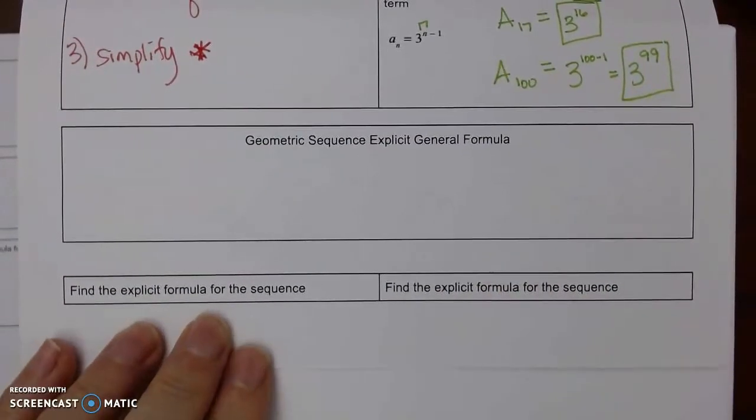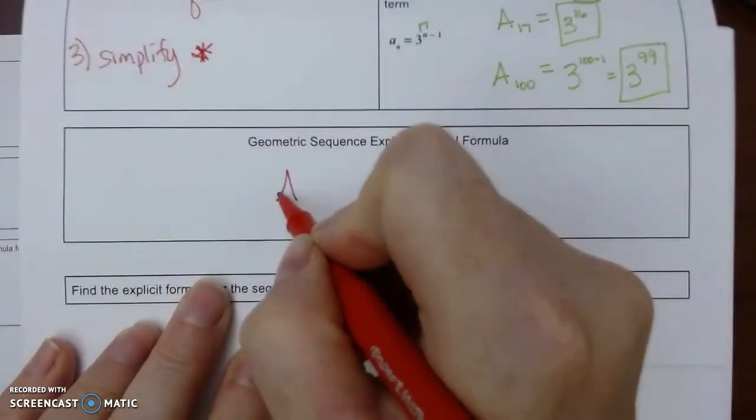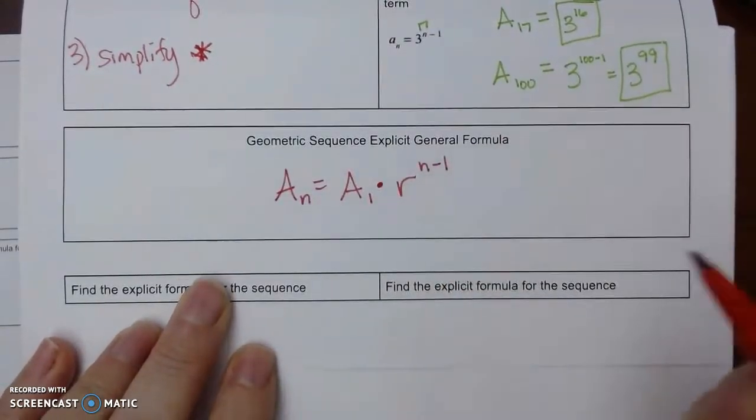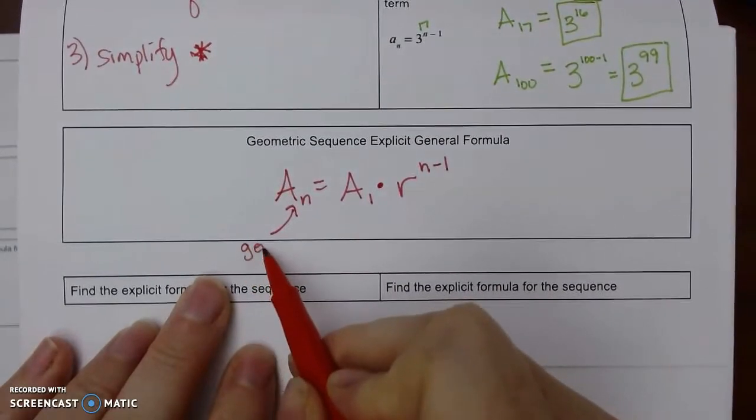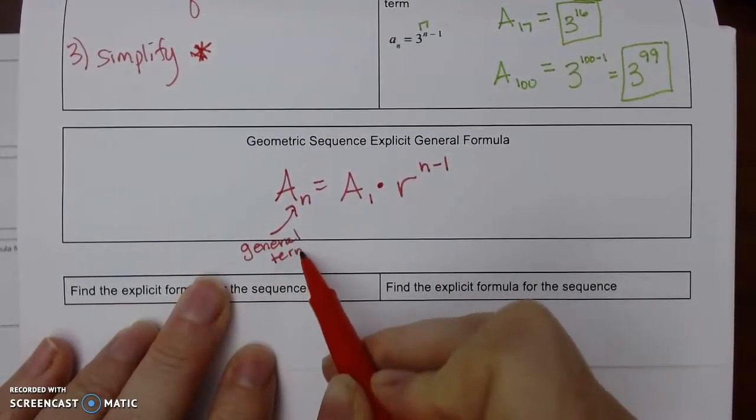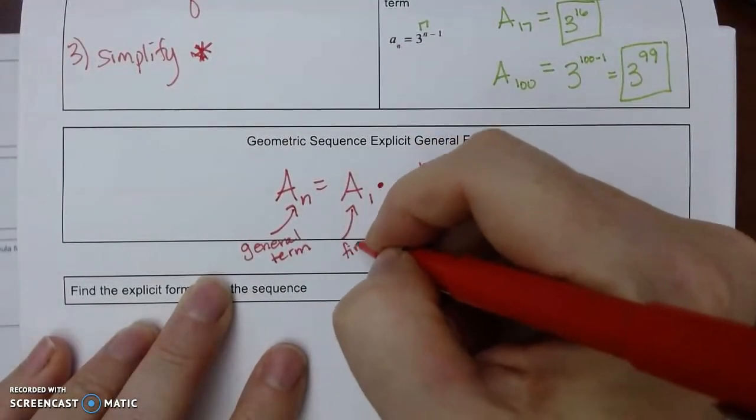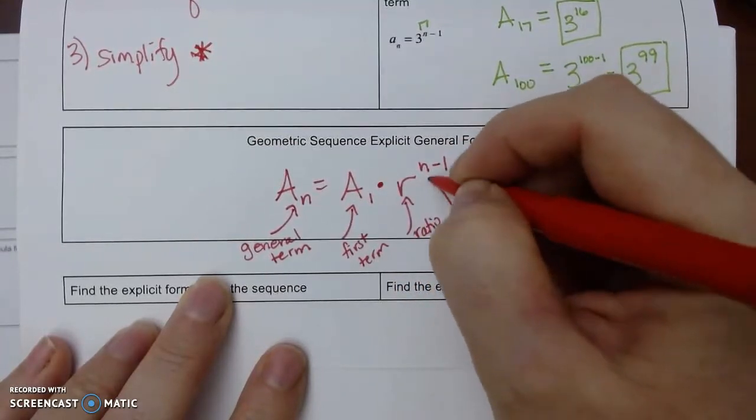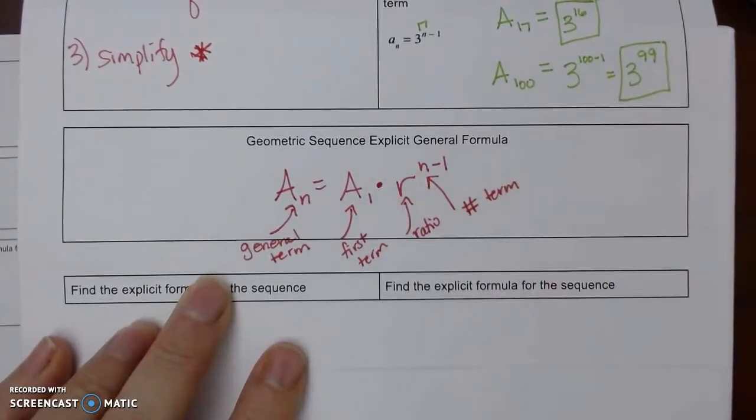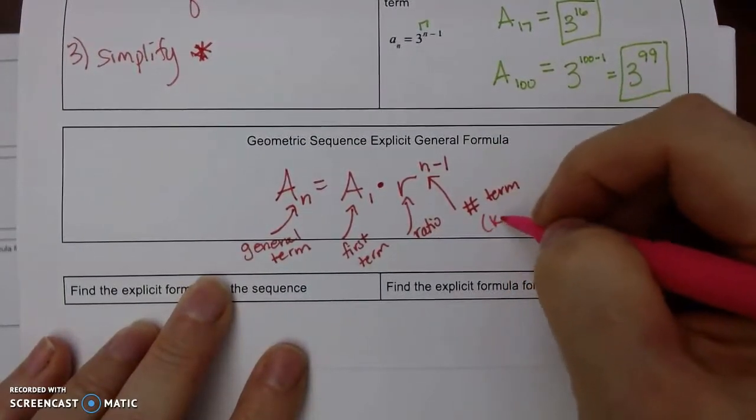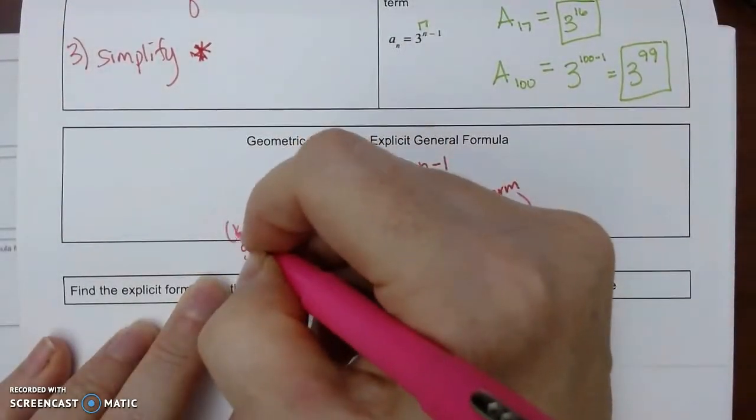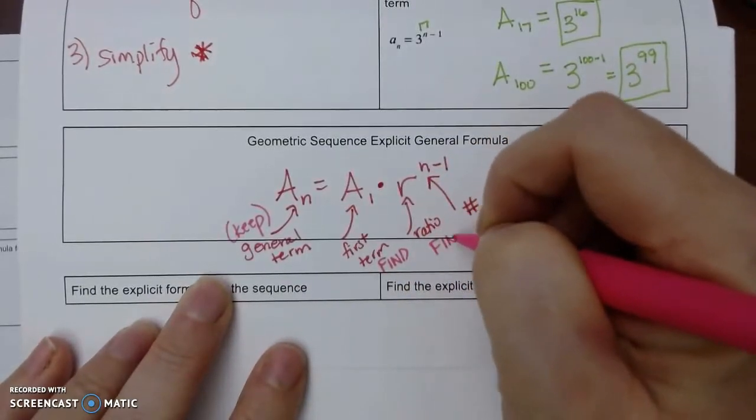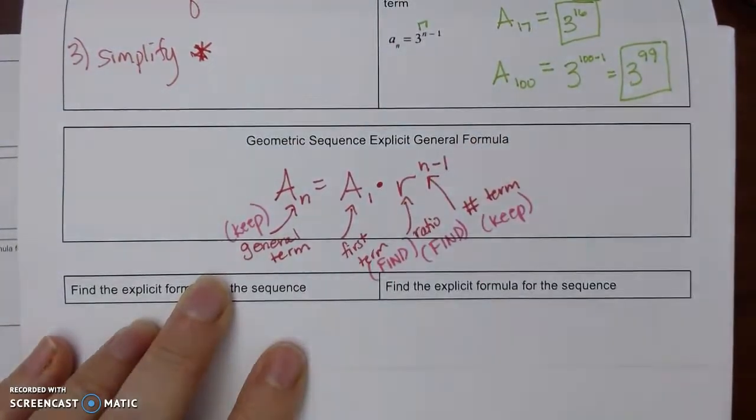Let's do our explicit general formula. For geometric, it's the same kind of notation. a sub n still stood for our general term. And you're always going to want to keep this. a sub 1 is our first term. You want to find that. r is the ratio, which is what you're multiplying by. And n is the number of the term that you're looking for. For a general formula, you typically want to keep the n and keep the a sub n. You'll want to find a sub 1 and find the ratio.